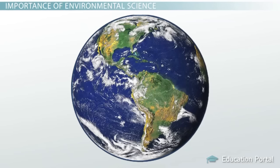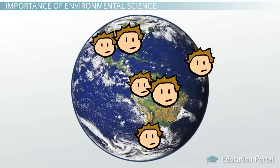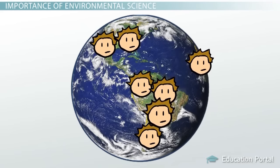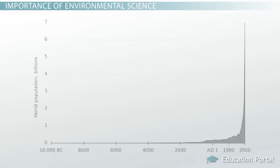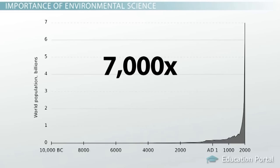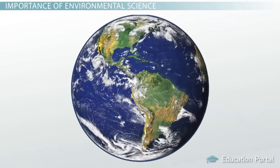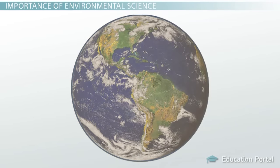The large change is the dramatic increase in the number of humans on Earth. For most of human history, the population has been less than a million people, but the current population has skyrocketed to over 7 billion people. This equals out to 7,000 times more people. Due to this increase in the human population, there has also been an increase in pressure on the natural resources and ecosystem services that we rely on for survival.